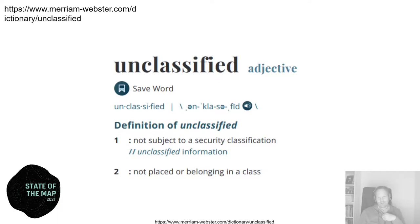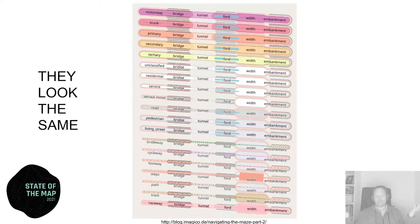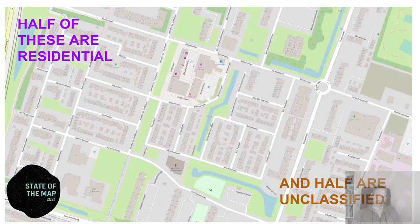Unclassified - the definition is all wrong. The dictionary definition is it doesn't belong to a class. That's what unclassified literally means. However, if you look on the OSM wiki, it says the value of unclassified is itself a classification. So that's already a clear sign we don't really know, as an OSM community, what it is and what it isn't. It means a minor road - sure. But a residential road is also a minor road. What's more, they look the same. Unclassified and residential look exactly the same on the map. Half of the roads in this example are residential but the other half are unclassified. Can't tell the difference.